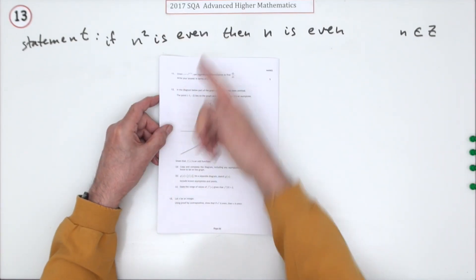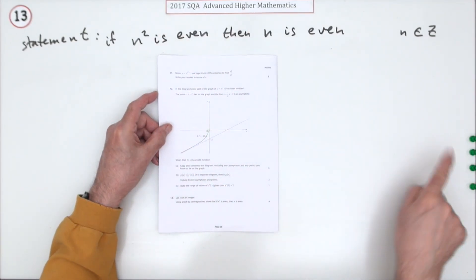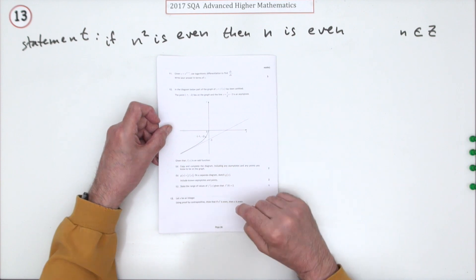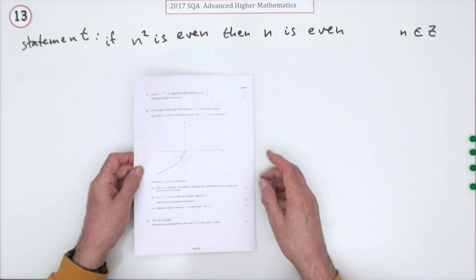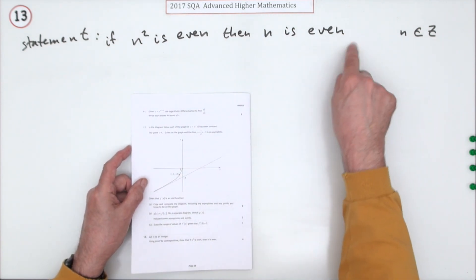Number 13 then from the 2017 Advanced Higher Maths, here we go, four marks for a proof question. An indirect proof question. It says using proof by contrapositive, show that this statement is true.